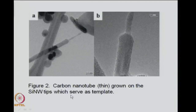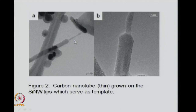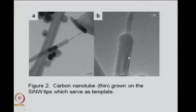Here is an example of template-mediated growth where you are trying to grow carbon nanotubes on silicon nanowire tips. The silicon nanowire is the template on which you are growing the carbon nanotube. The carbon nanotubes are these thin tubes growing out of these silicon nanowires — the carbon nanotube is being guided by the silicon nanowire which was formed earlier.